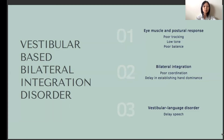Children with vestibular-based bilateral integration disorder face problems in three main areas: eye muscle and posture response, bilateral integration and sequencing, and vestibular language disorder. Children with inefficient vestibular processing abilities have poor oculomotor control, and thus they usually have difficulty reading, often skipping words or lines. They also tend to have poor ball skills and can find it a challenge to cross the road safely, as they can't keep their eyes fixed on moving traffic while walking at the same time. They might also experience low muscle tone. Low tone children have difficulties maintaining the upright position and get tired easily. When they are at their desk, they often slouch and prop their heads up with their hands. They can also appear clumsy and have difficulty maintaining their balance on uneven surfaces, such as when walking along a curb.